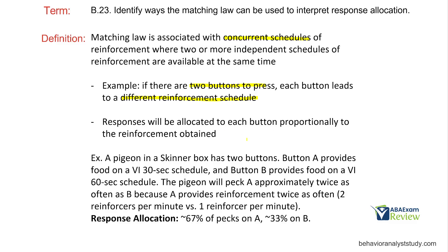Responses will be allocated to each option proportionally to the reinforcement obtained. Skinner analyzed this using pigeons in his Skinner box. Button A provides food on a Variable Interval 30-second schedule; once 30 seconds pass and a response occurs, it's reinforced. Button B provides food on a VI 60-second schedule — you have to wait twice as long. Matching law says responses will be allocated to A about twice as often as B because A provides reinforcement twice as often — roughly 67% on A and 33% on B.